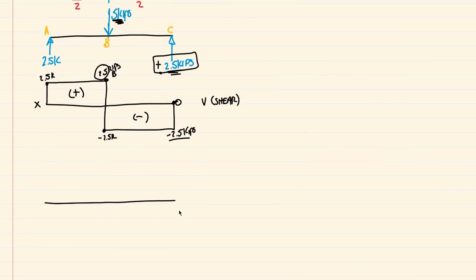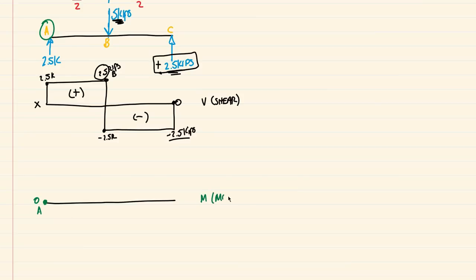Now we'll draw the moment diagram. The easiest way to get values for the moment diagram is to look at our shear values. If we differentiate the moment equation we get the shear — meaning the shear diagram values are the slopes at any point along the moment diagram. At point A we have a pin support, and pins do not support moments, so the moment at point A is 0. All units here are kip-feet.